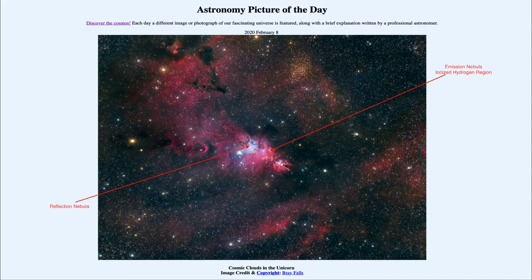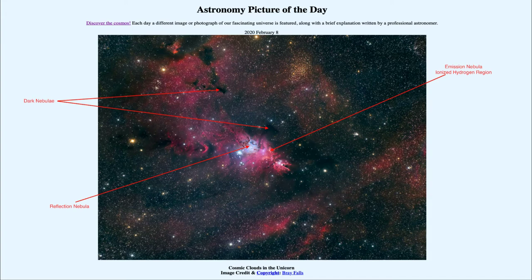Now, the third type of nebula is a dark nebula, and there are several different examples of it here. Those are areas where the dust is more heavily concentrated and blocks out the light from behind it. And once it does that, then we do not see anything.